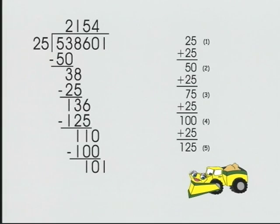Looking at our chart, we see that we can subtract 100 from 101. 100 is four 25s. Subtract.